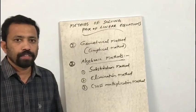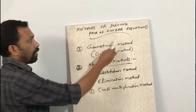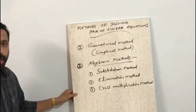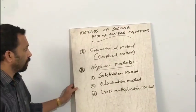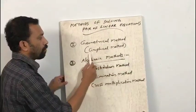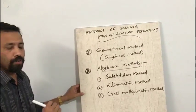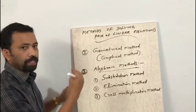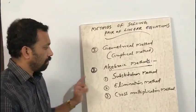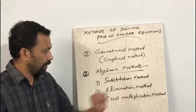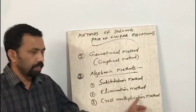Good morning students. Today's topic is methods of solving a pair of linear equations. There are mainly two methods: the first is the geometrical or graphical method, which we have already discussed in previous classes. So we'll move on to the next method, that is algebraic methods. The most commonly used algebraic methods are: substitution method, elimination method, and cross multiplication method.